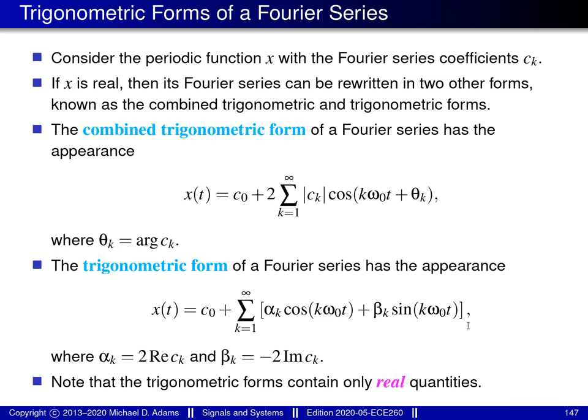The advantage of both the combined trigonometric form and the trigonometric form is that they involve only real quantities. So if you're dealing with real-valued functions and want to avoid complex arithmetic, these two ways of rewriting the Fourier series are quite helpful for eliminating complex arithmetic and requiring only real arithmetic.